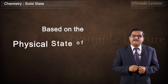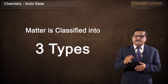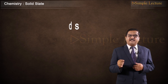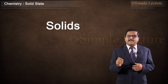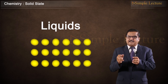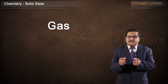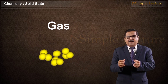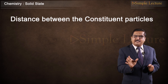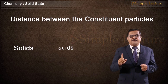Based on the physical state of matter, matter can be classified into three types: solids, liquids, and gases. In case of solids, the constituent particles are very close to one another. In case of liquids, they are a little away, and in case of gases, they are further away. In general, the distance between constituent particles increases from solids to liquids to gases.